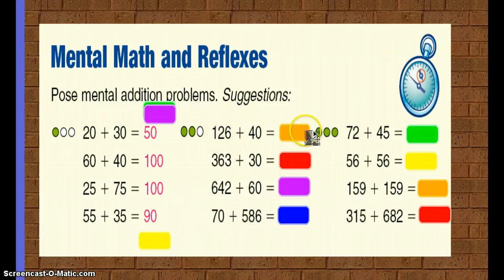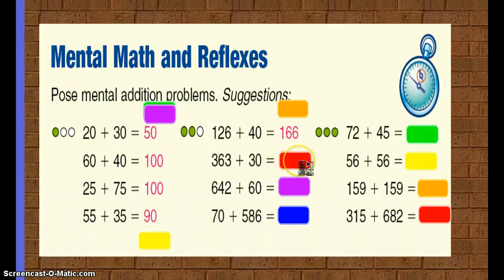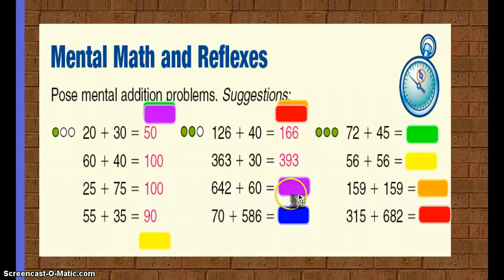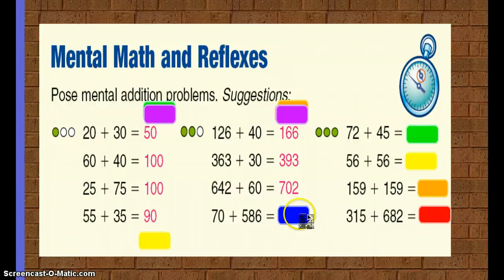126 plus 40 equals 166. 363 plus 30 equals 393. 642 plus 60 equals 702. And 70 plus 586 equals 656.